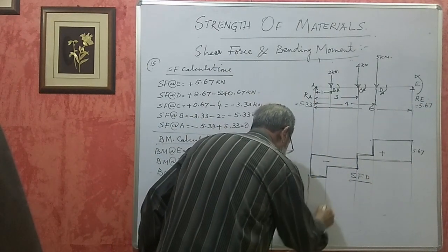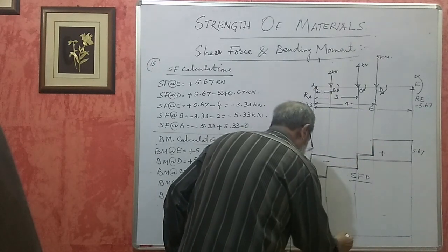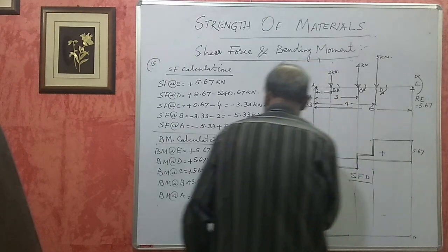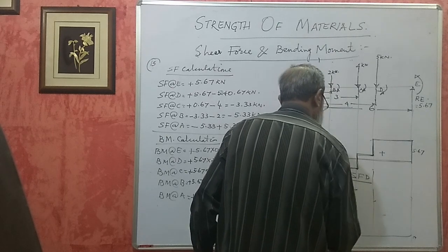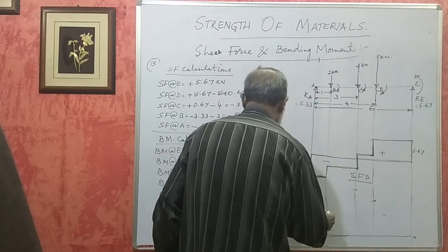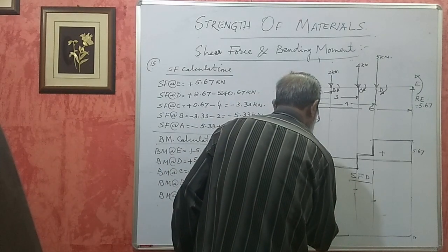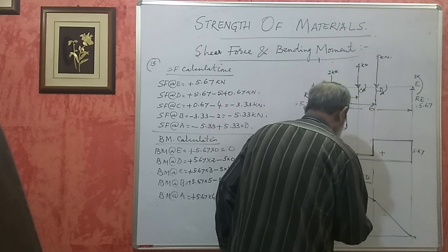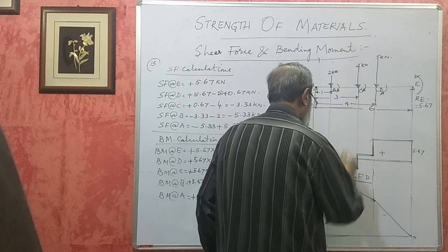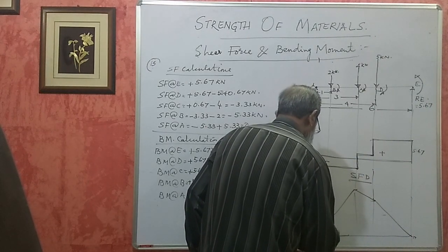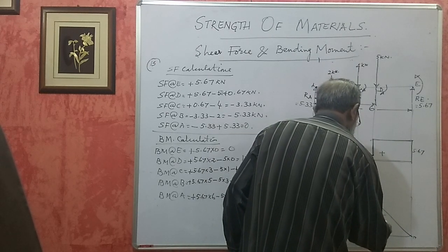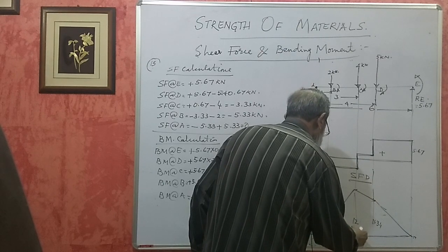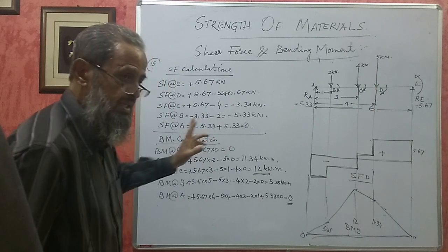The shear force changes sign from positive to negative at point C. Where the shear force changes sign from positive to negative or negative to positive, the bending moment will be maximum. This is called the point of contra-flexure. This is our SFD. For the BMD, project further down and join the values with straight lines since these are all point loads. The BMD is also a closed figure. This problem usually carries ten marks.